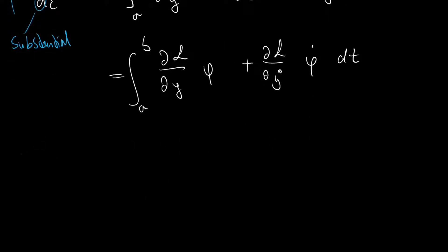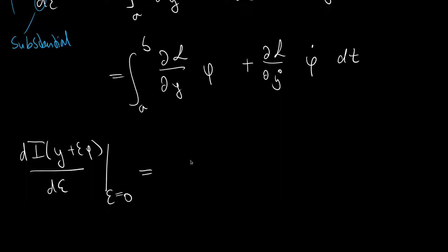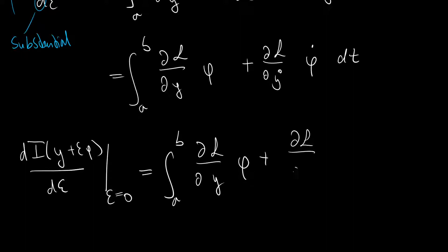The last step of the Gateaux variation is to set ε equal to zero. Since there are no remaining ε terms, the expression doesn't change. We are left with the integral from a to b of (∂L/∂y · φ + ∂L/∂y' · φ') dt. We now encounter the same problem as in the functional derivatives video: we have a derivative on φ' and need to get rid of it to apply the fundamental lemma of calculus of variations.